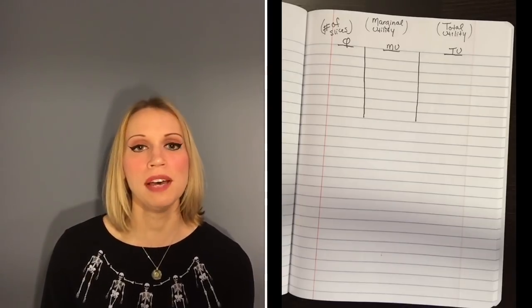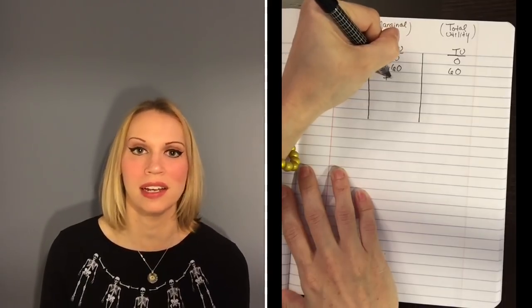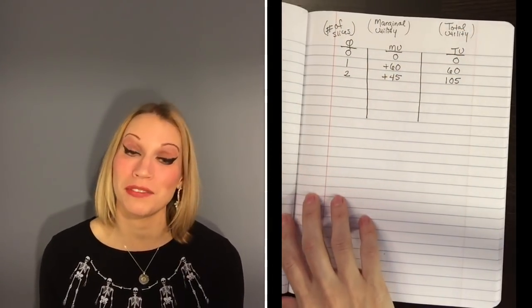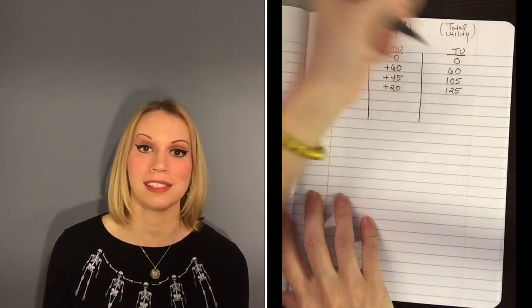So back to the pizza. When you have that first slice, it is like magic — you get an extra 60 utils from that first slice, so your overall total satisfaction is 60. Now you're going to eat a second slice. The second slice is still pretty good; the pizza is still hot and you're still kind of hungry, but it's just not quite as magical as that first slice. Let's say it only gave you an additional 45 utils, making your overall total 105 utils from those two slices. You eat a third slice — that third slice is okay, let's say you only get an additional 20 utils, so now your grand total is 125 utils from three slices of pizza.